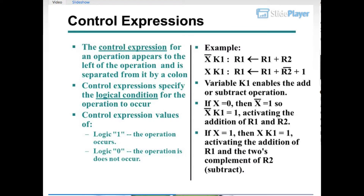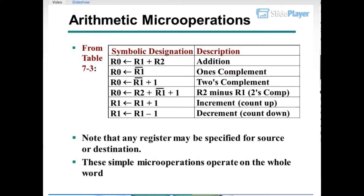Control Expressions: The control expression for an operation appears to the left of the operation, separated by a colon. Control expressions specify the logical condition for the operation to occur. If the control expression is Logic 1, the operation occurs; if Logic 0, it does not. Example: X̄K1: R1 ← R1 + R2 and XK1: R1 ← R1 + R2 + 1. Variable K1 enables add or subtract. If X=0, X̄K1=1 activates addition of R1 and R2. If X=1, XK1=1 activates addition of R1 and the 2's complement of R2 (subtract).